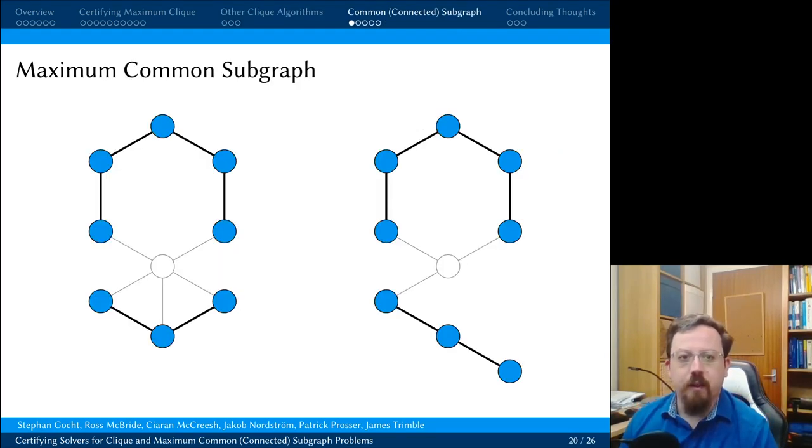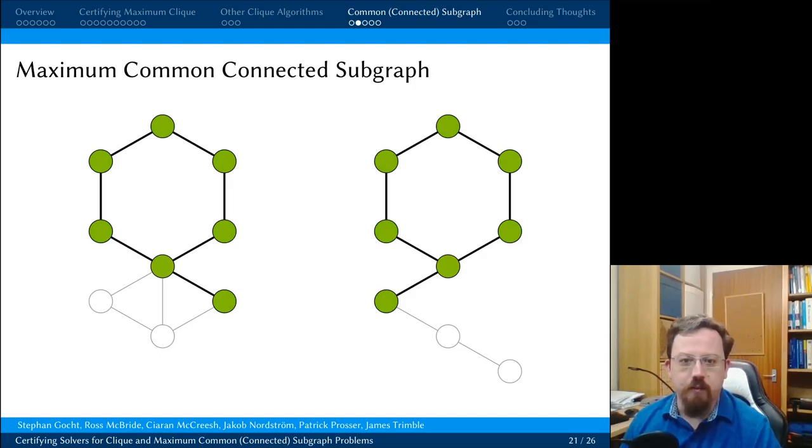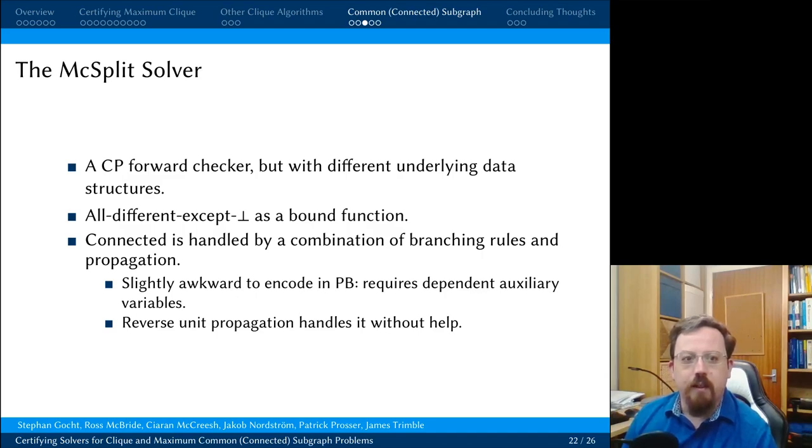And finally, we look at maximum common subgraph problems. So you're given two graphs and you want to find the biggest graph that's common to both of them. This is finding an injective partial mapping from the first graph to the second. And we're also interested in the connected version of the problem, where the graph you find has to be connected. The state-of-the-art here is a CP-style forward checker called McSplit, but it uses different underlying data structures that exploit the special structure of the domains to run much faster. It uses all different except null as a bound function, and it can do this in linear time due to this special structure. And it handles the connected constraint through a combination of branching rules and propagation.